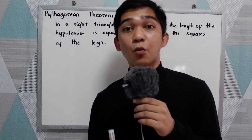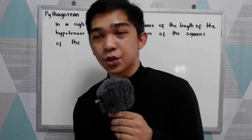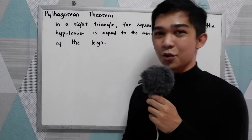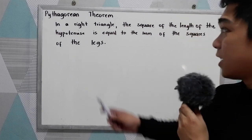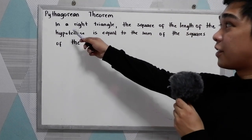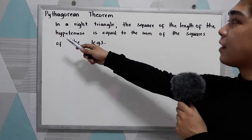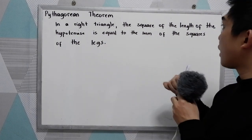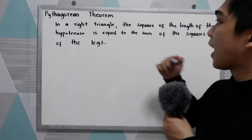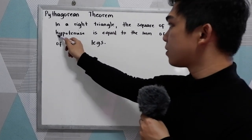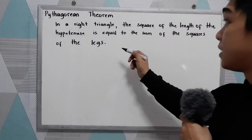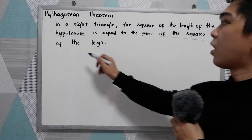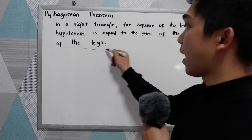Good day everyone. Today I will be discussing the Pythagorean Theorem. The theorem states that in a right triangle, the square of the length of the hypotenuse is equal to the sum of the squares of the lengths of the legs.